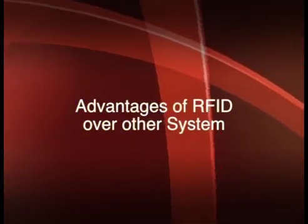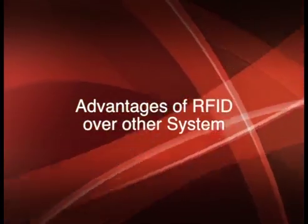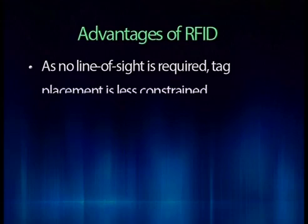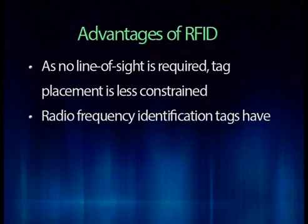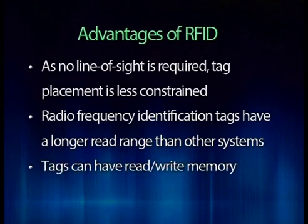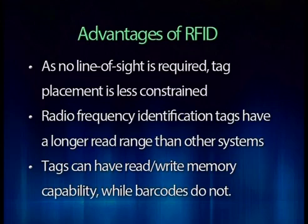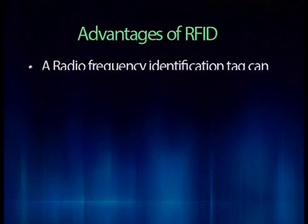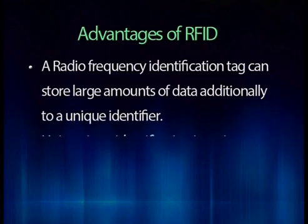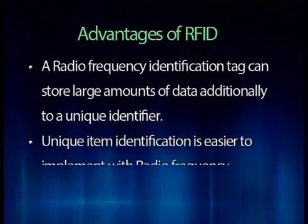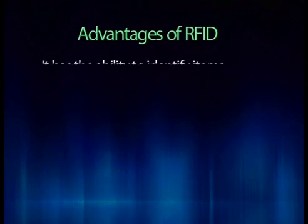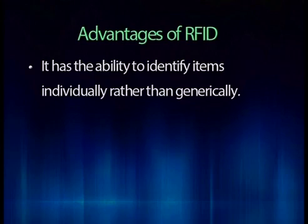Let us now consider various advantages of radio frequency identification systems over other systems. As no line of sight is required, tag placement is less constrained. RFID tags have a longer read range than other systems, for example barcodes. Tags can have read and write memory capability, while barcodes do not. An RFID tag can store large amounts of data in addition to a unique identifier. Unique item identification is easier to implement with RFID than with barcodes, with the ability to identify items individually rather than generically.